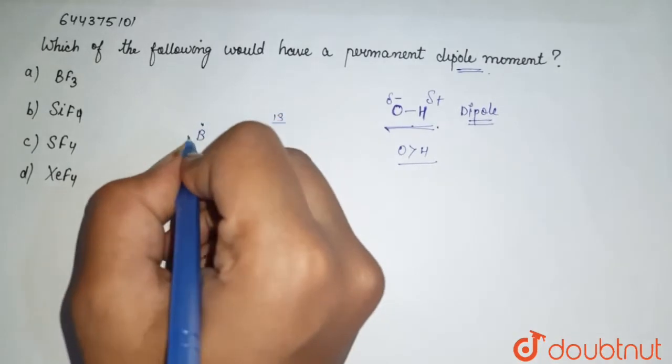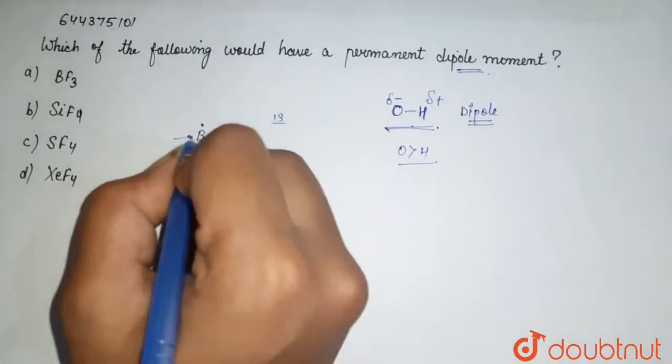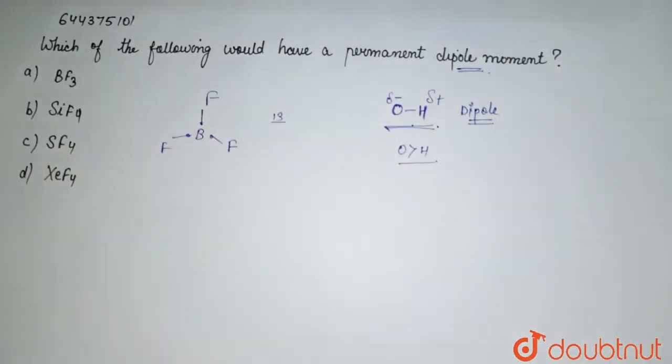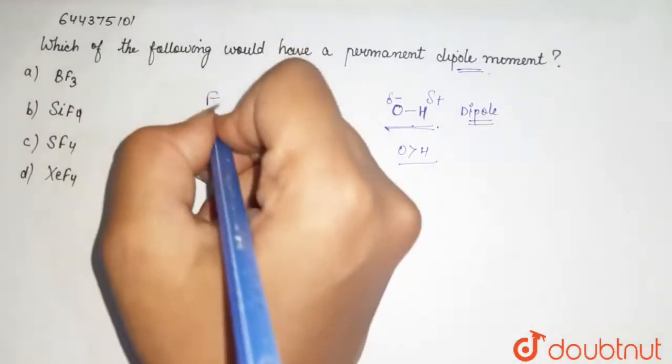So it has three valence electrons, one, two, three. Here are fluorine, fluorine, and fluorine. Fluorine is more electronegative than boron, so it draws the electron density towards this side.